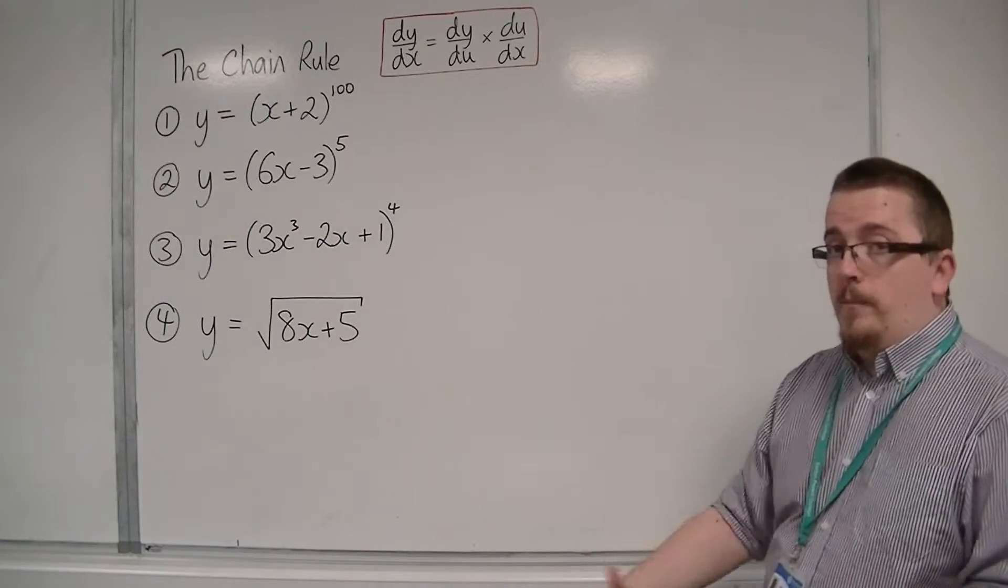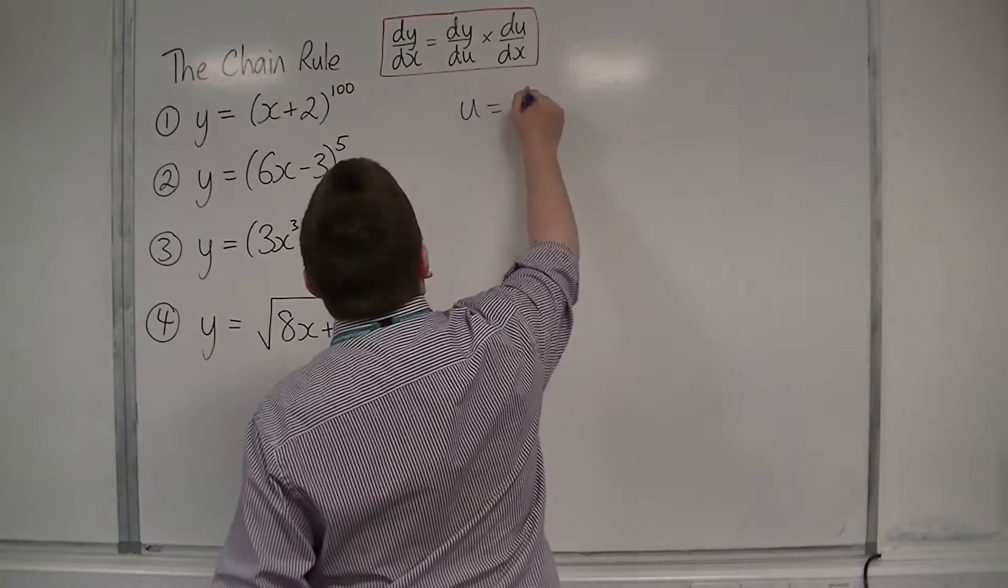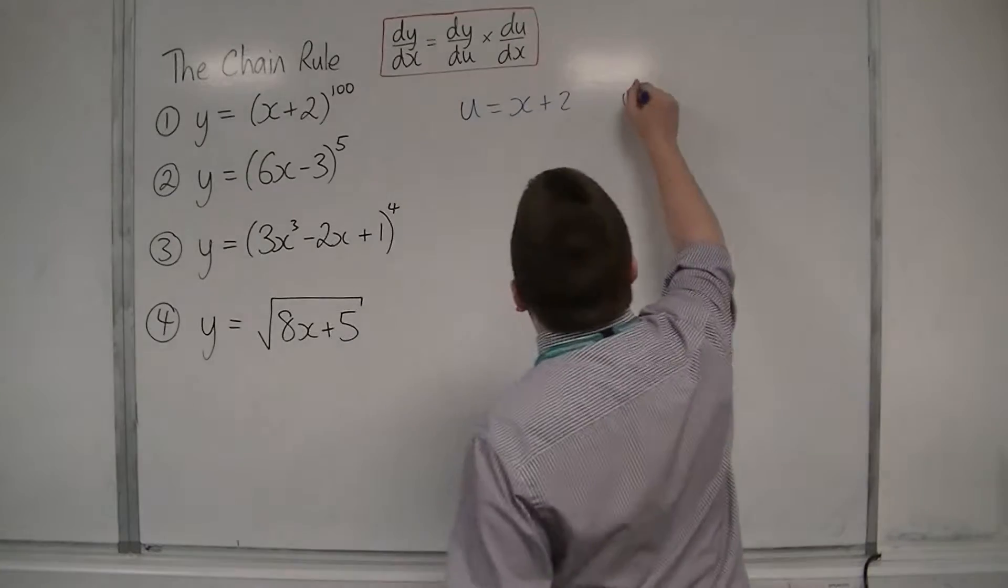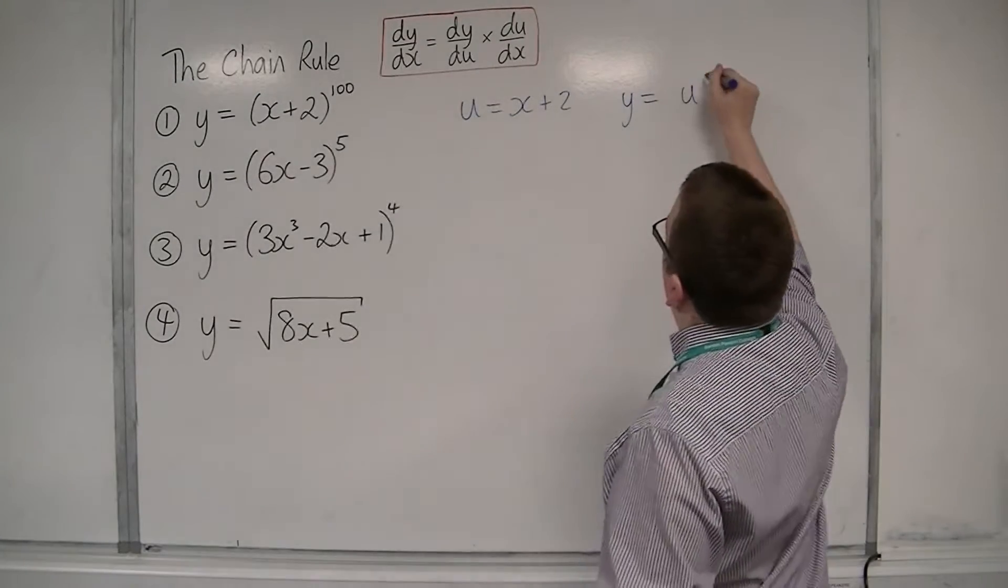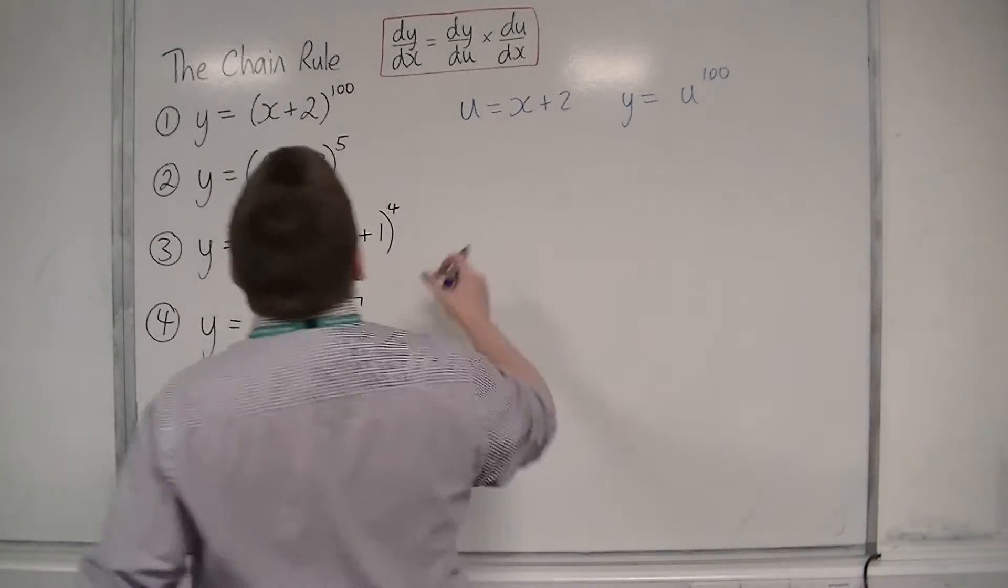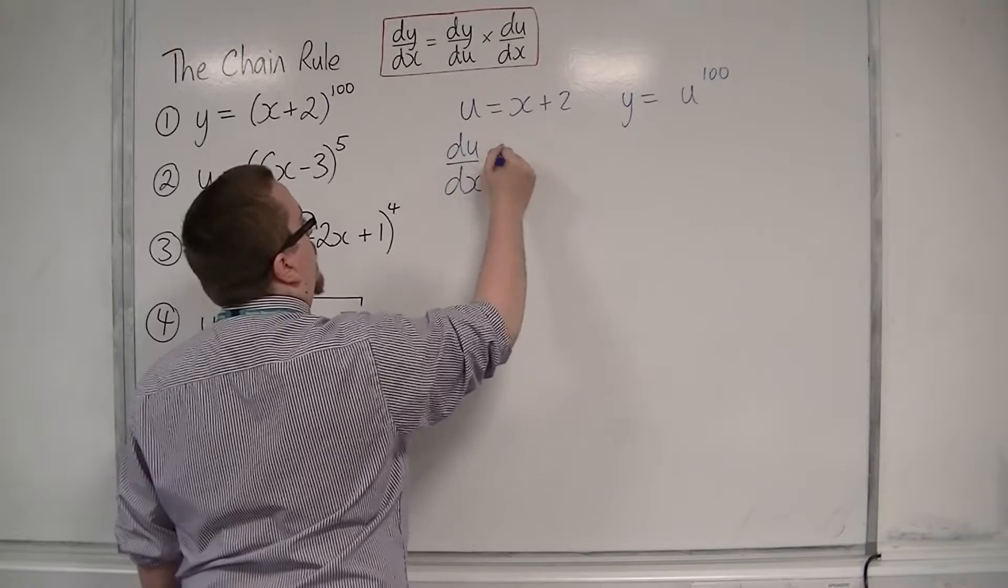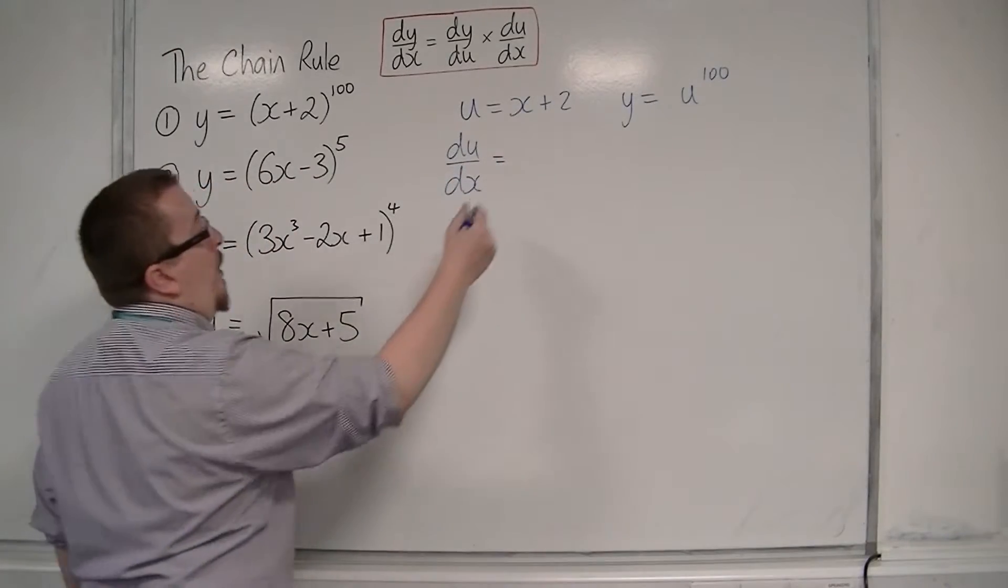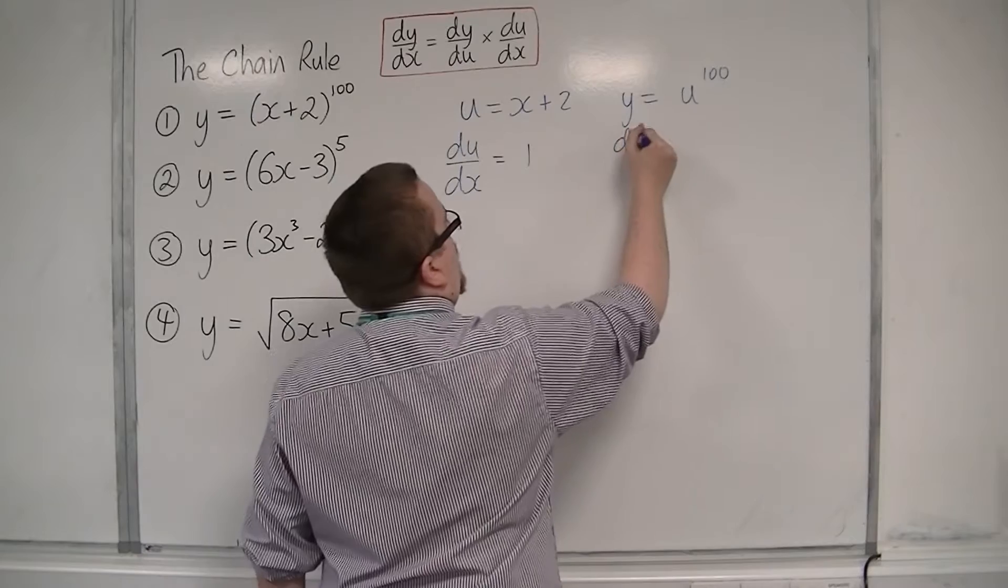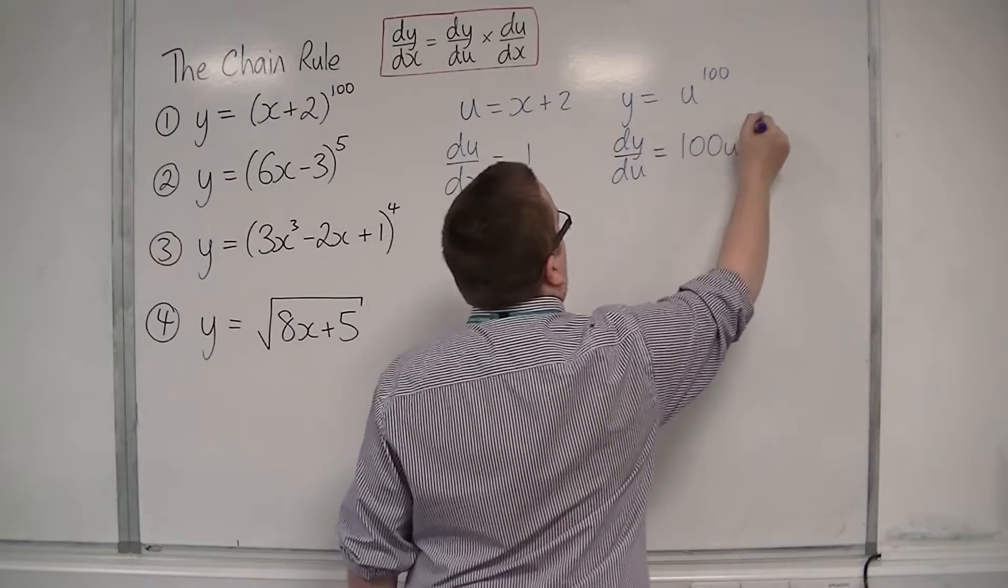We're first going to set up that substitution, so let u equal x plus 2, so y is now equal to u to the power of 100. Then we want du by dx, so du by dx is equal to just 1, and dy by du is equal to 100u to the power of 99.